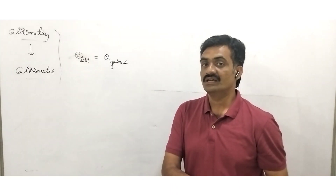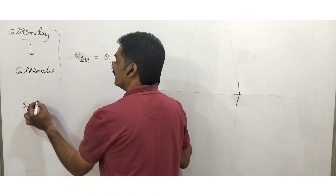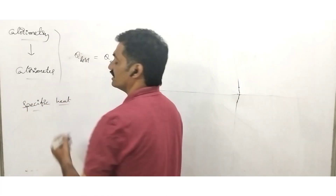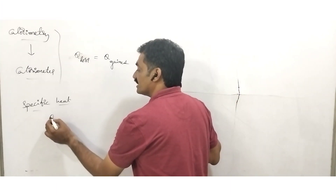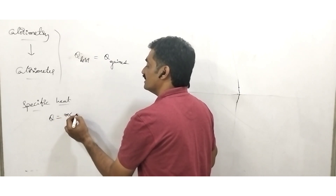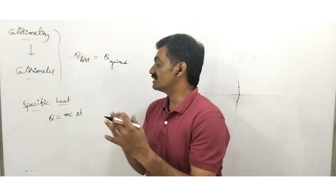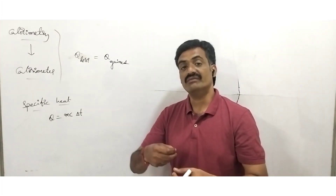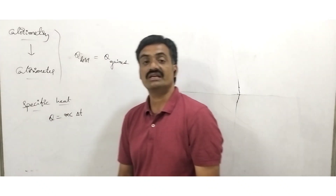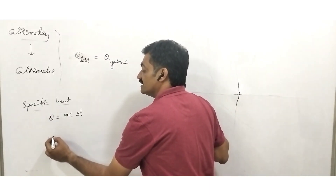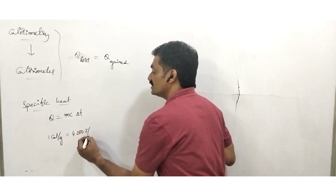Here we consider two cases. The first is when a body gains temperature on gaining heat — we represent that as specific heat. In a specific heat condition, the body gains temperature on absorbing heat. The amount of heat transferred is represented as Q = mcΔT, where ΔT is the change in temperature, C is specific heat, and m is the mass of the substance. Specific heat is defined as the amount of heat required by one gram of substance to raise its temperature by one degree Celsius. It is represented with units of calories per gram or joules per kg, where one calorie per gram equals 4200 joules per kg.